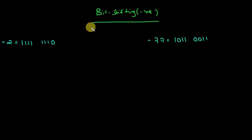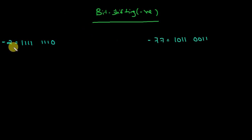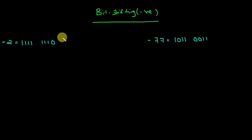In this presentation we shall learn about bit shifting in negative numbers, which is somewhat more interesting than positive numbers. Here you can see minus 2 — its binary value is 1 1 1 1 1 1 1 1 0, stored in 2's complement form. If you have any doubt regarding 2's complement or negative numbers, you can check out my previous videos.